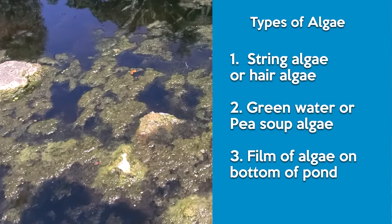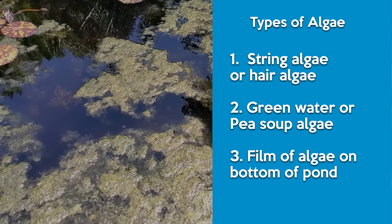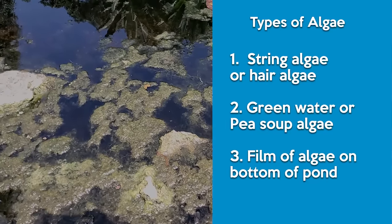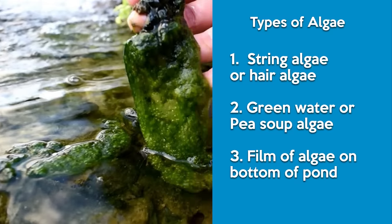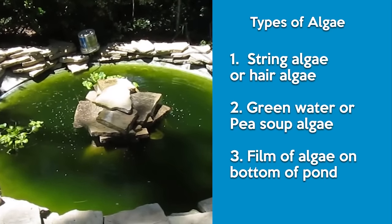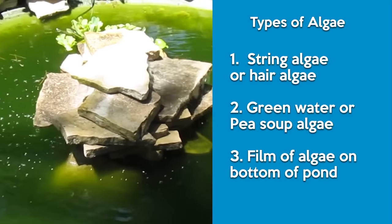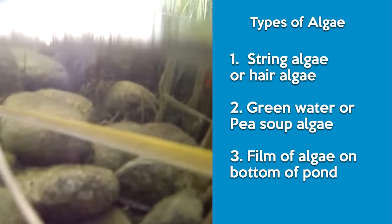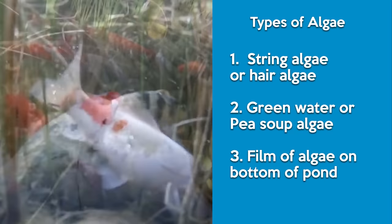There are three types of algae we deal with commonly in ponds. Number one, string algae or hair algae — this can basically be removed by hand. It grows on rocks, waterfalls, the side of the pond, and even plants that are not healthy. If you see it growing on a plant, the plant may have a stressor like rocks or algaecide which is causing it to decay and feed the algae. Number two, green water or pea soup algae — these algae are single-celled and not connected to one another physically; they are individual floating organisms in the water which give the water the appearance of pea soup. Number three, film algae — not longer than a quarter inch, covering the walls and floor of the pond or stones in the water.